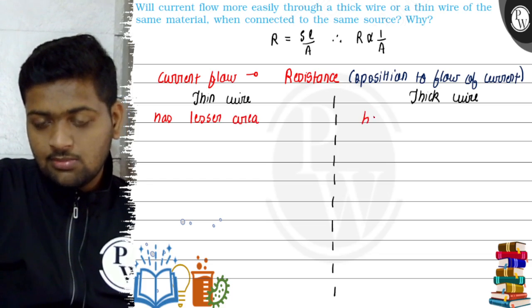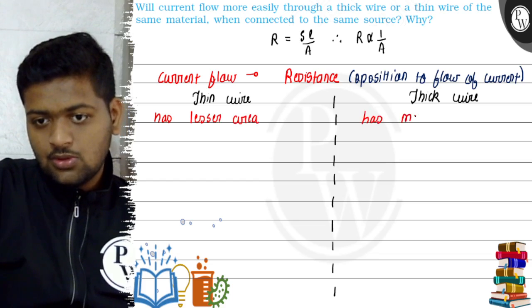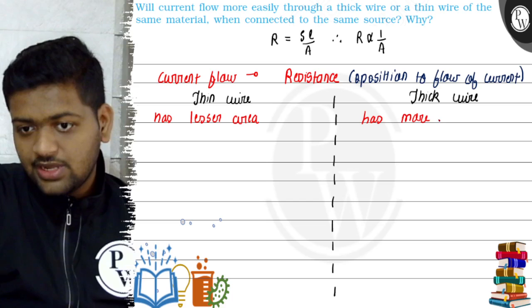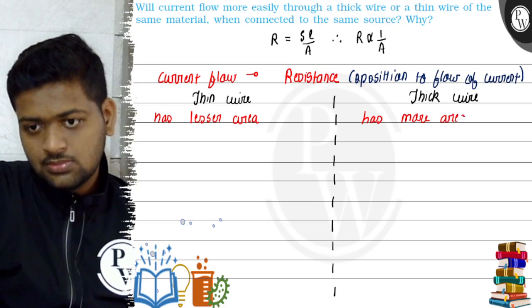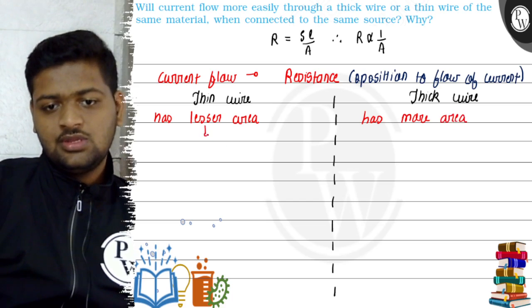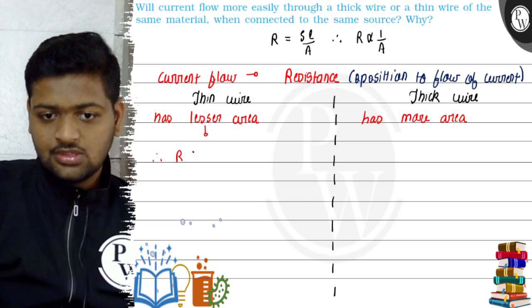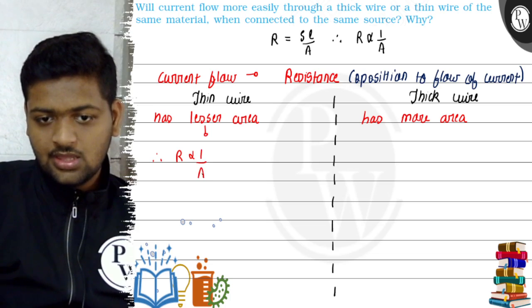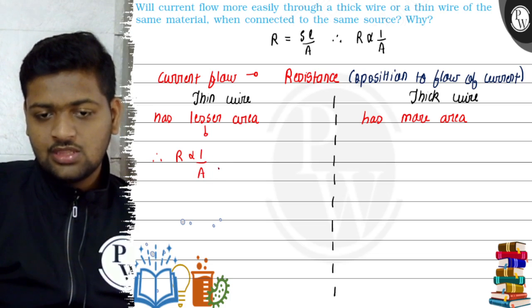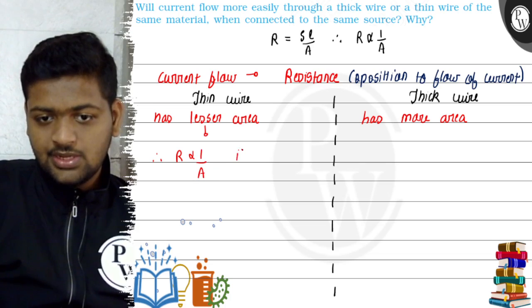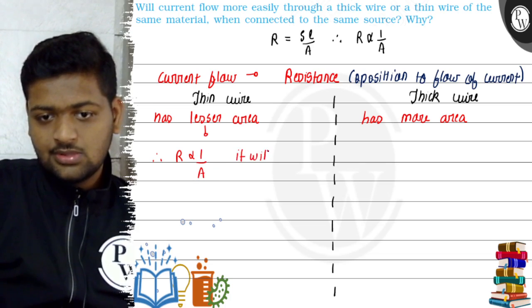And thick wire has more area, obviously because they have more radius. Now since it has less area, because resistance is inversely proportional to area, because it has less area it will have more resistance.